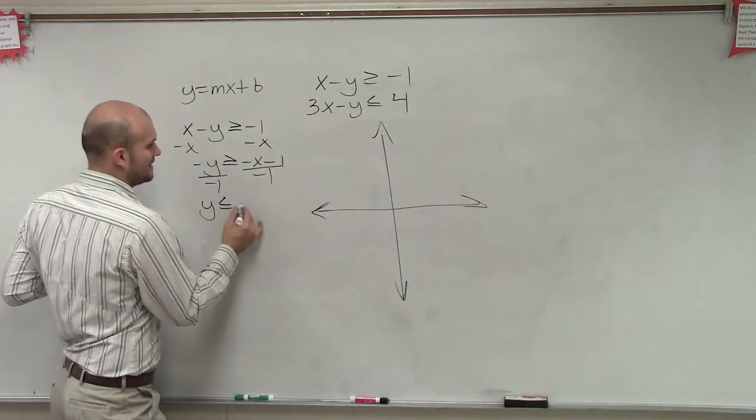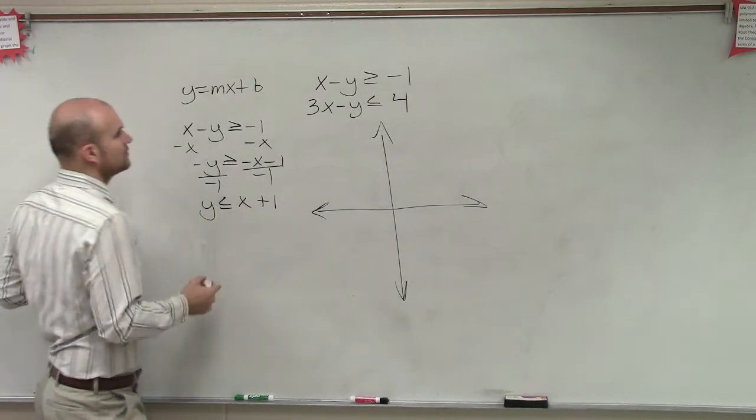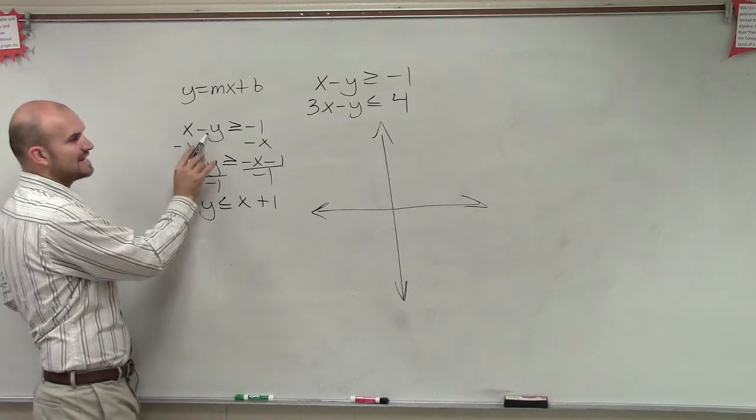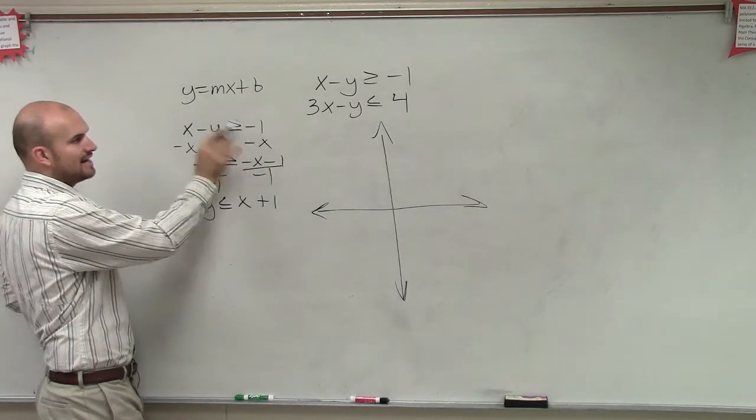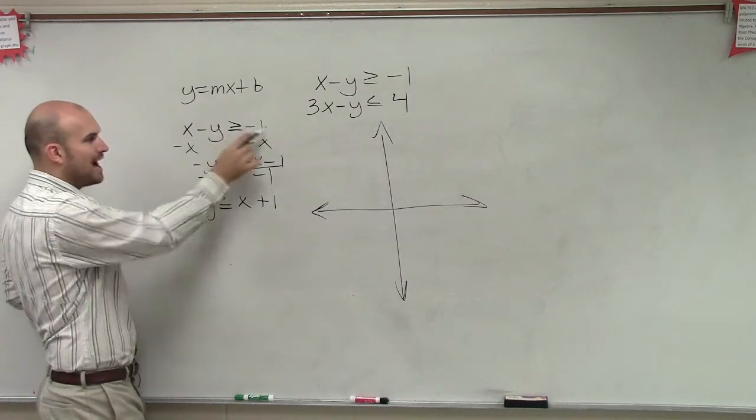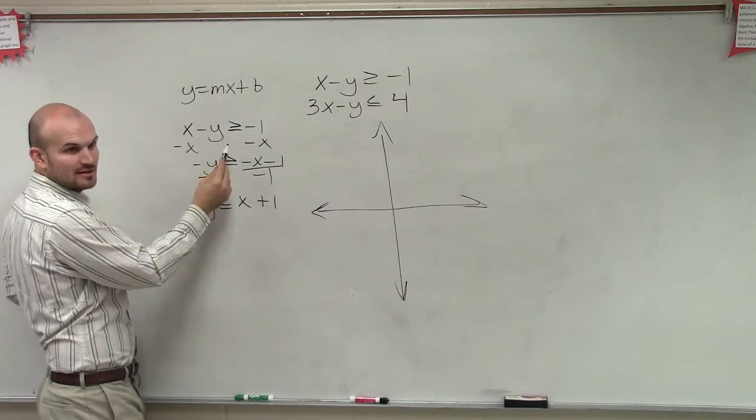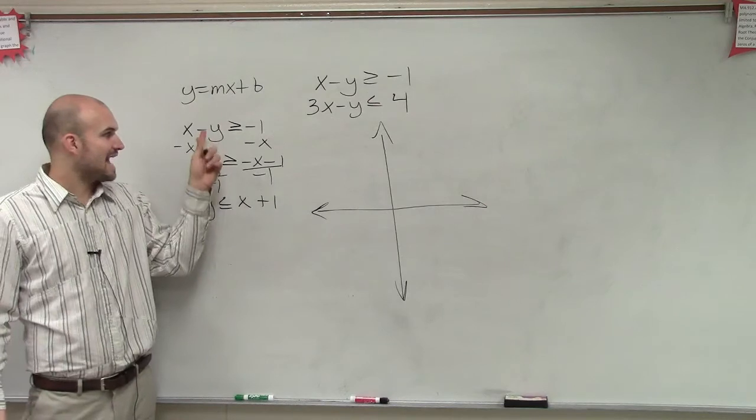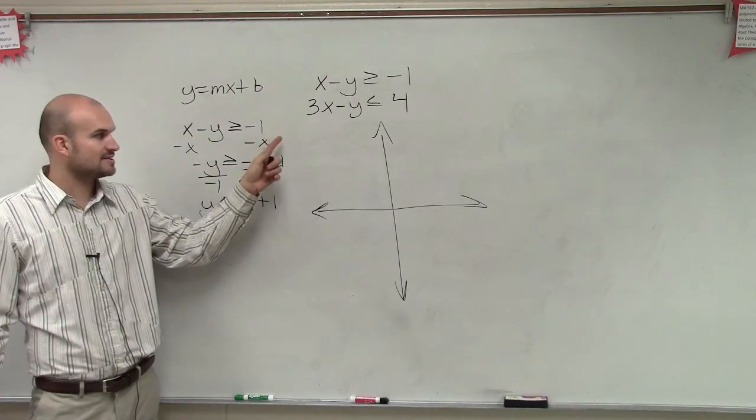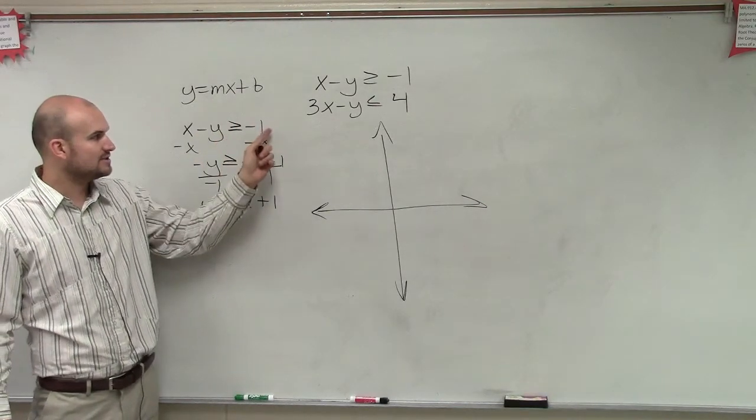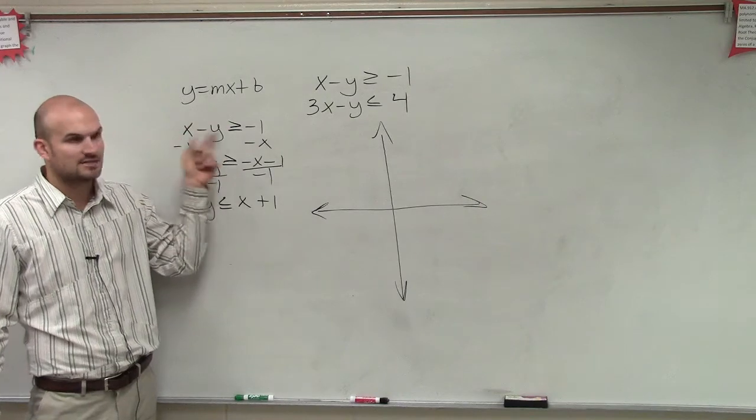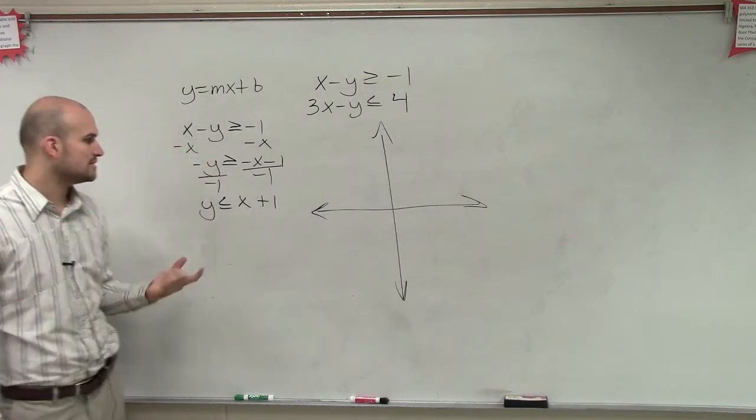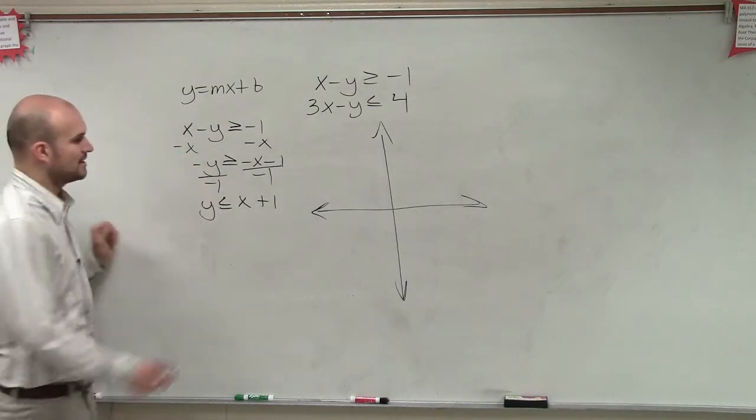Now you might say, why is that always true? Well, ladies and gentlemen, what happens if I just added the y to that side and then added the 1 to that side? You'd have y is less than x plus 1, right? Does everybody see that? If you did not divide by a negative 1 and you just added the y over there to make it positive and added the 1 over there, you'd still have y is less than x plus 1. So it's just a different way to solve it. So here's this equation.